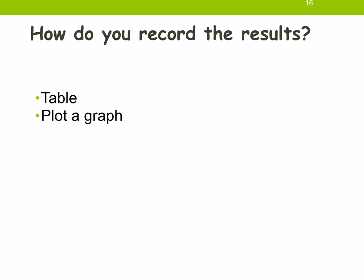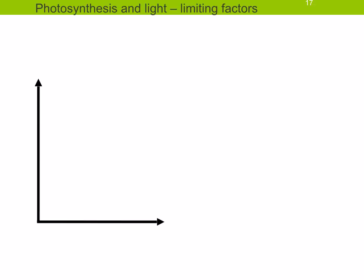When recording results, you'll have a table and then need to plot a graph. Remember: the independent variable — the one you are controlling — goes on the x-axis, and the dependent variable — the one that varies according to what you're controlling, for example the rate of photosynthesis — goes on the y-axis. So light intensity goes on the x-axis, and rate of photosynthesis goes on the y-axis.